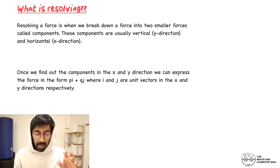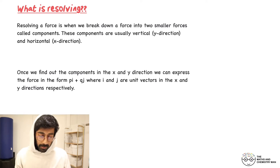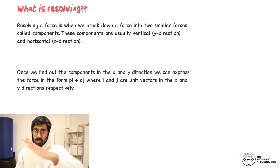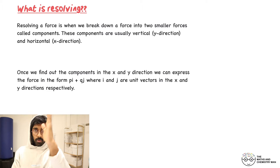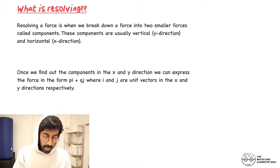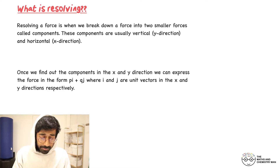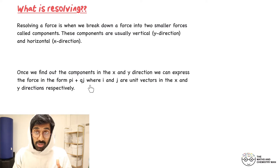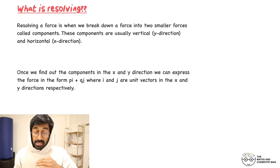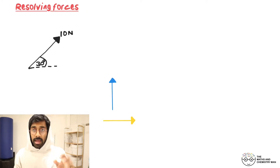These components are usually vertical, i.e. in the y direction, or horizontal in the x direction. So what we're going to do is take a force which is sloping and turn it into an upwards force and a sideways force. Once we've found the components in the x and y direction, we can express these forces in vector form — in i and j form — where i is the unit vector in the x direction and j is the unit vector in the y direction.